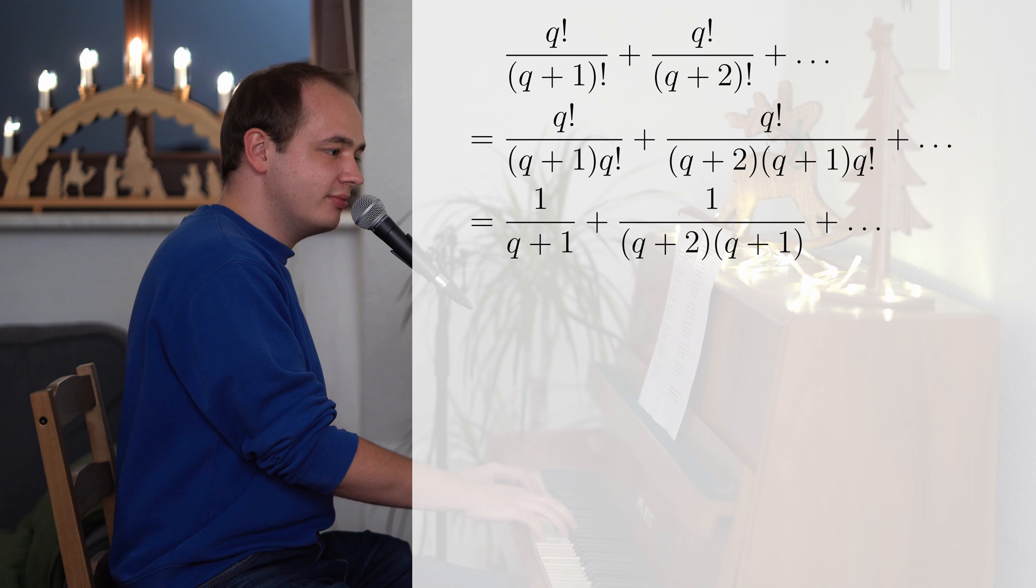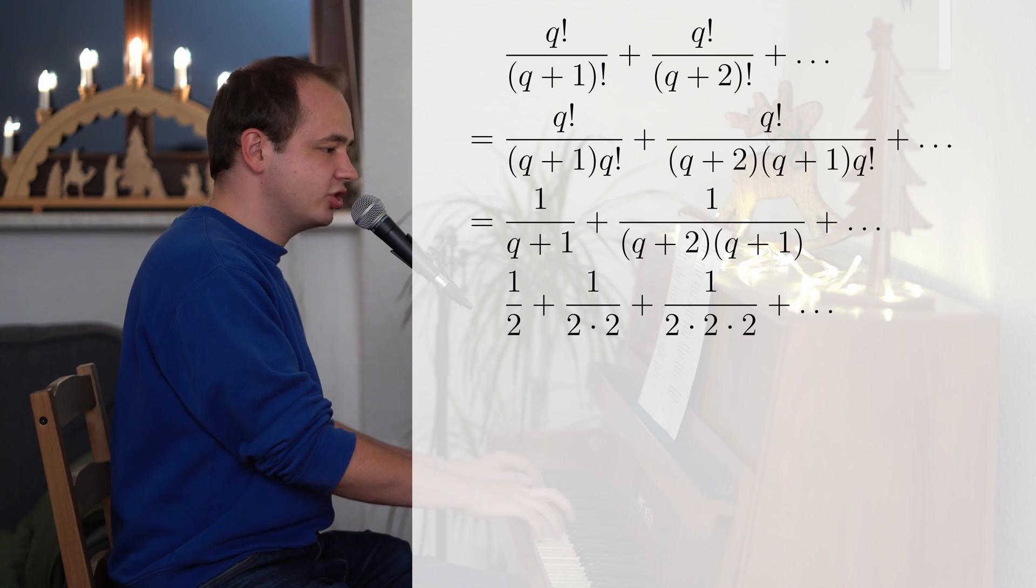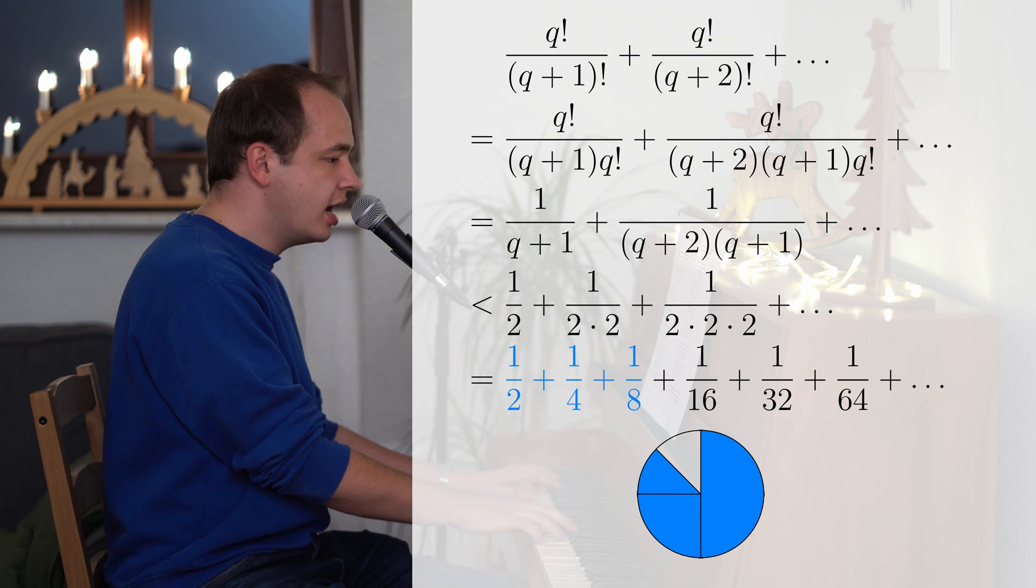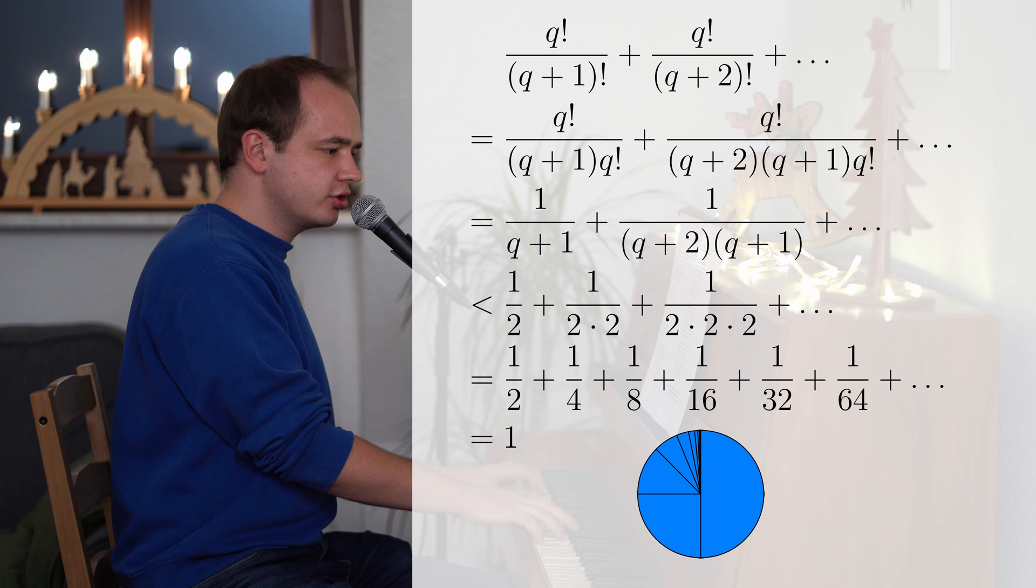And if we observe every single factor is bigger than q, so every single factor must be at least 2, then we know if every time we only write 2, the denominators will have to get smaller. So the whole fraction has to be bigger right now. But for this series, I'm just gonna show you how you can visually see what this has to be. Just take a half and a quarter and an eighth and see how it gets closer and closer to 1. So this series converges to 1.